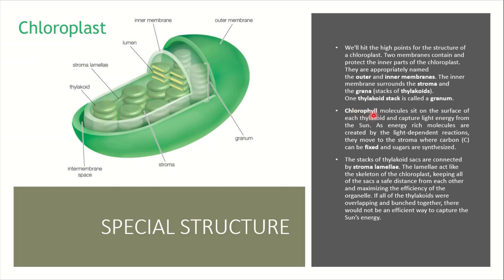If we talk about chlorophyll, the thylakoids on their upper surface easily capture light energy from the sun. This creates energy-rich molecules through a process called the light-dependent reaction. These energy-rich molecules then move into the stroma, where they fix carbon and synthesize sugar.